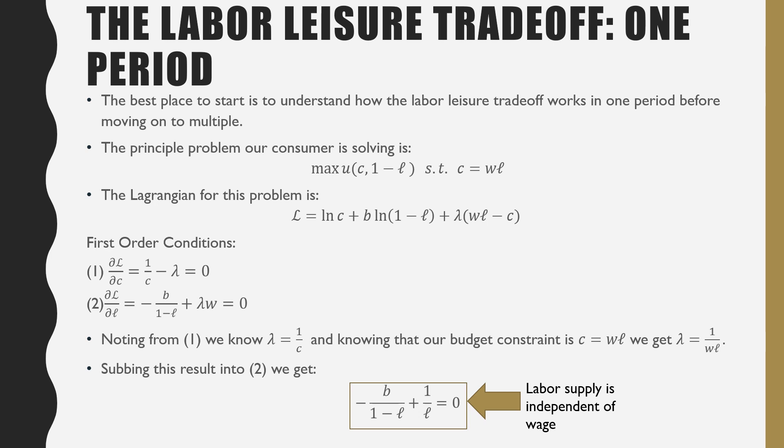Taking that condition and putting it into 2, we get something which is initially not so novel, as in we can't really learn anything. But we notice that no matter how we adjust this equation, our labor supply is going to be independent of wage. That's the interesting thing.